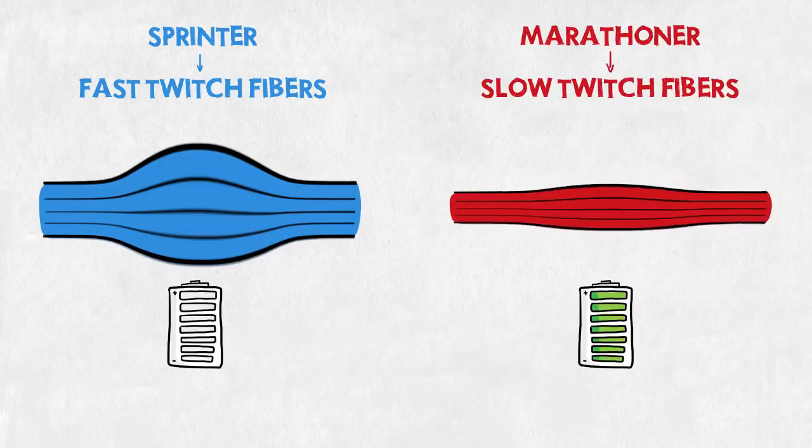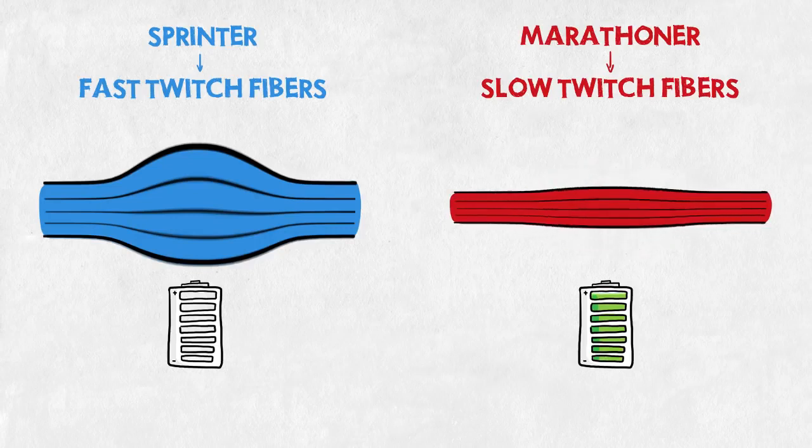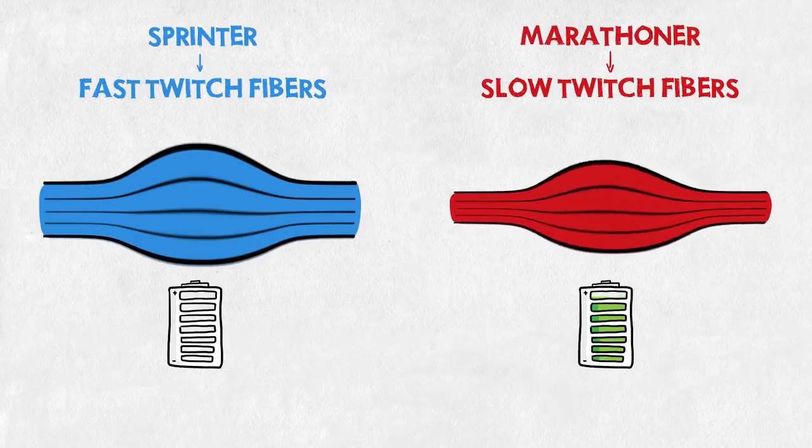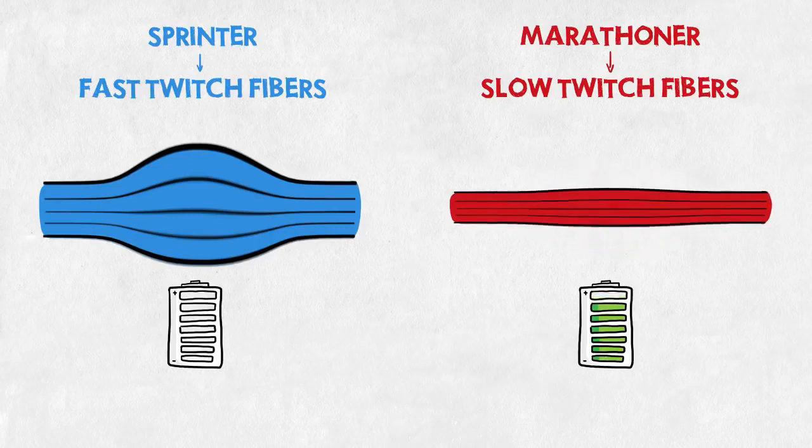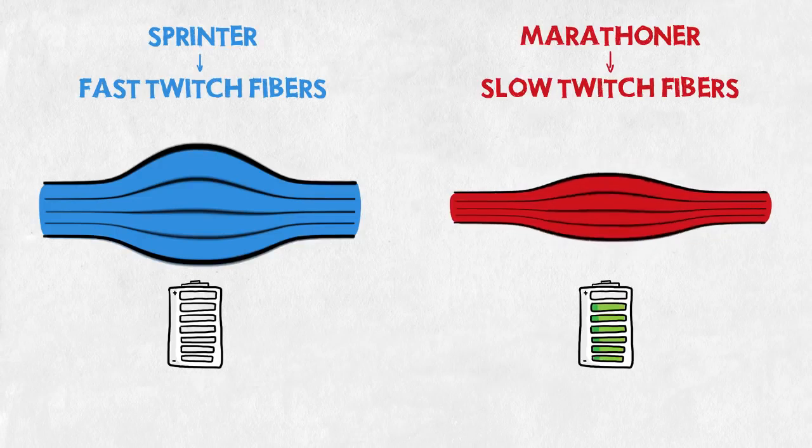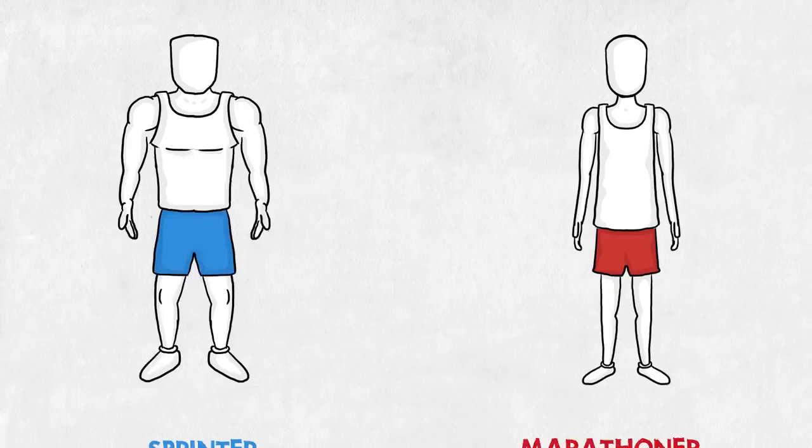On the other hand, a marathoner uses mostly his slow twitch fibers, not as reactive and speedy as their fast twitch brothers, but they can work nonstop for hours. Even when trained, these fibers remain slim and light.